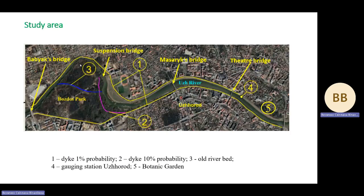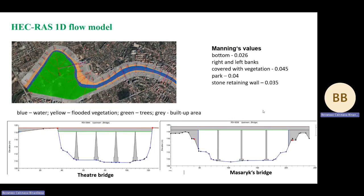During floods, the territory of Bozdush park and the botanic garden floods every 2–3 years. Hydraulic calculations of the flood level at 1% probability were carried out using HEC-RAS software — a 1D flow model. The basis of the calculation is the digital model of the area in the form of cross-sections and the sections of bridges.